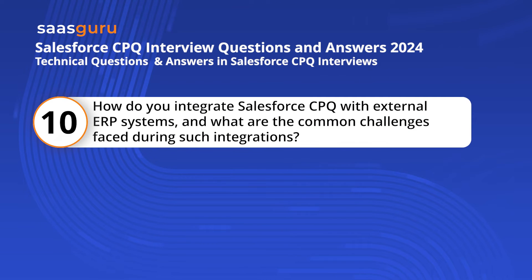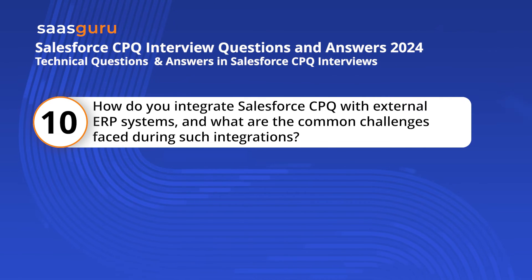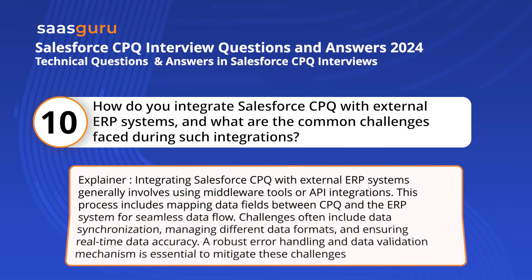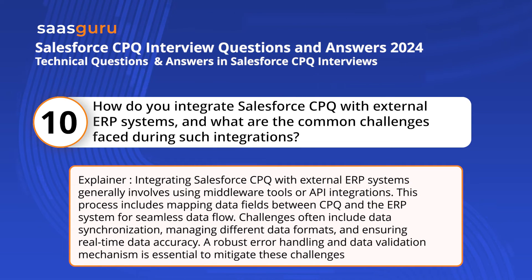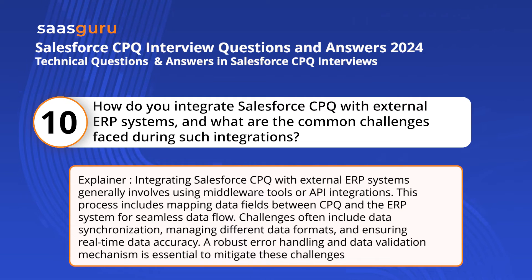Question 10. How do you integrate Salesforce CPQ with external ERP systems, and what are the common challenges faced during such integrations? Integrating Salesforce CPQ with external ERP systems generally involves using middleware tools or API integrations. This process includes mapping data fields between CPQ and the ERP system for seamless data flow. Challenges often include data synchronization, managing different data formats, and ensuring real-time data accuracy. A robust error handling and data validation mechanism is essential to mitigate these challenges.